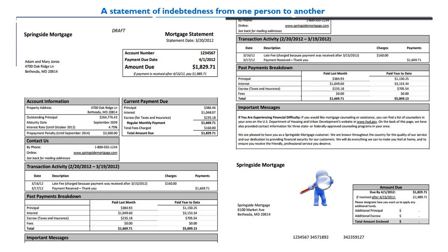Just a tip on account statements: most, if not all, account statements that you receive with a credit card or mortgage are unverified — they're not certified, they're just a statement. But a verified statement would be indicative of a verified accounting, and a verified accounting assures the financial statements are a true and fair representation of the underlying transactions. If the information contained in a financial statement is not verifiable, there exists no basis for placing trust in the information.